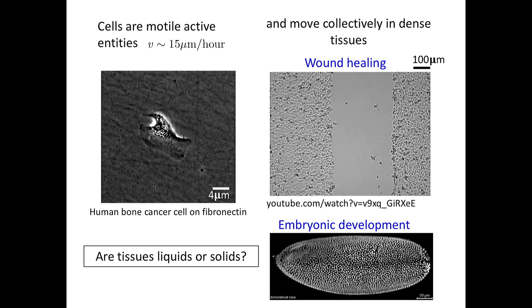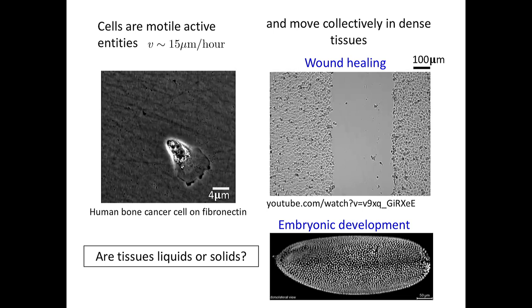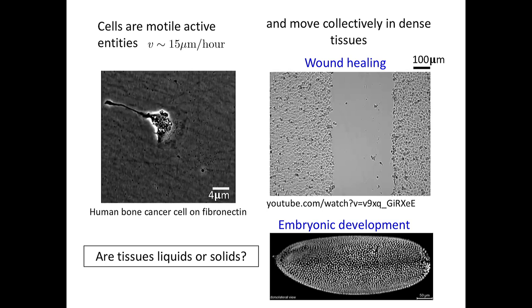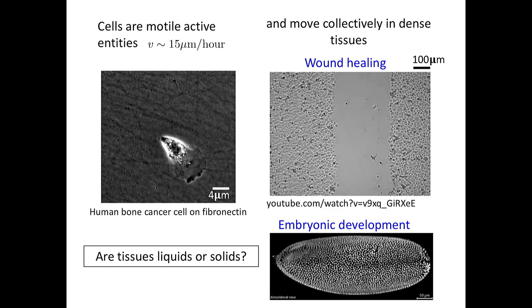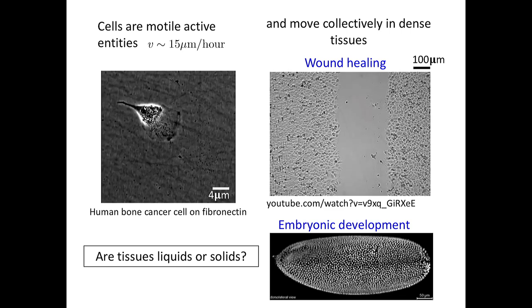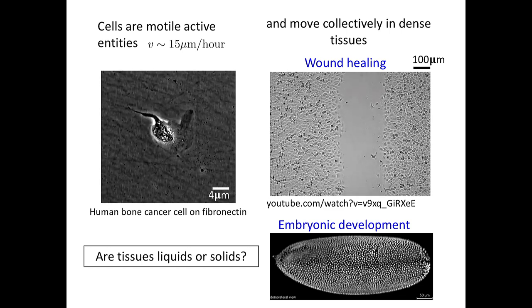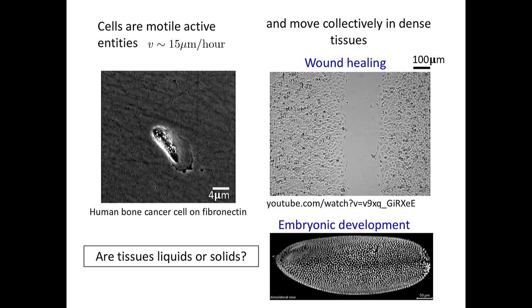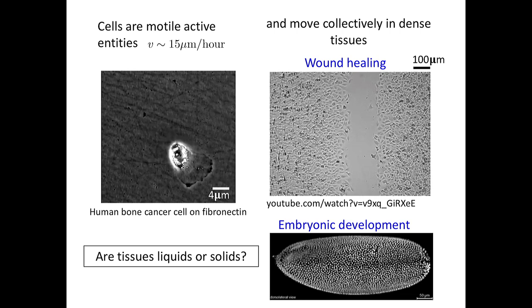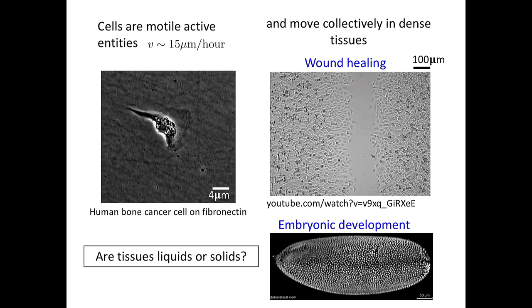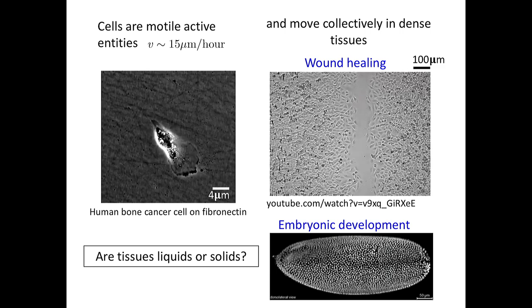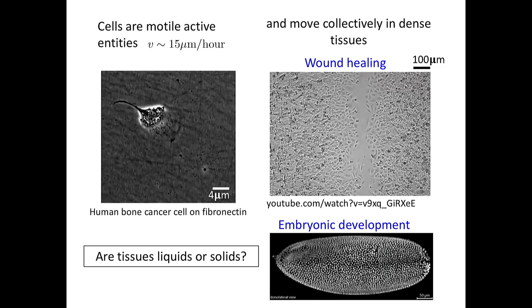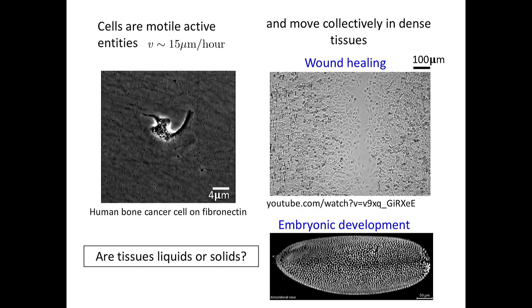In living tissues—and in particular I'm interested in epithelial tissues, two-dimensional sheets of cells generally on a substrate—cells move collectively. This is a movie of a wound-healing assay, where epithelial cells march coherently to fill in the wound in the tissue. Another great example is one that was shown this morning in a different system.